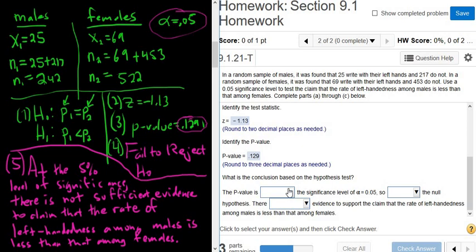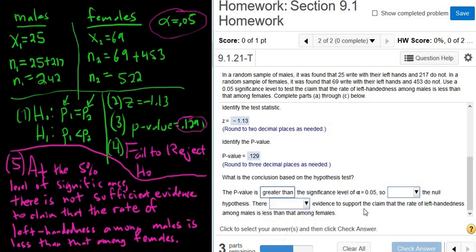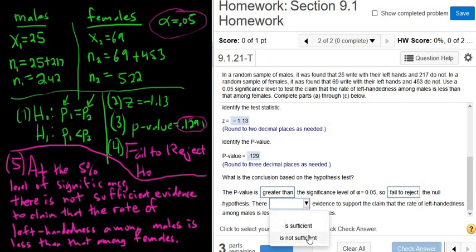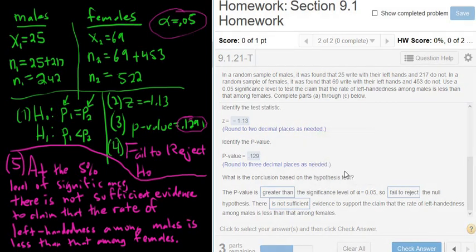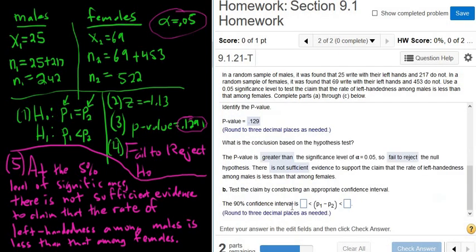The P value is greater than the significance level, so we fail to reject. There is not sufficient evidence to support the claim that the rate of left-handedness among males is less than that among females. Now the problem also asks for a confidence interval.